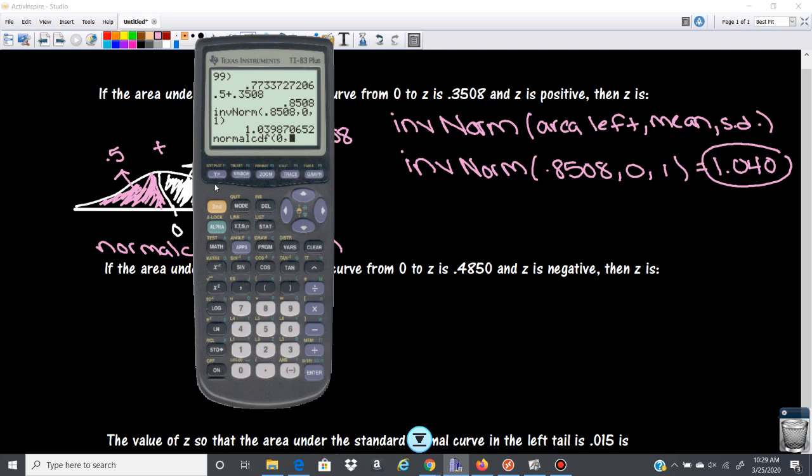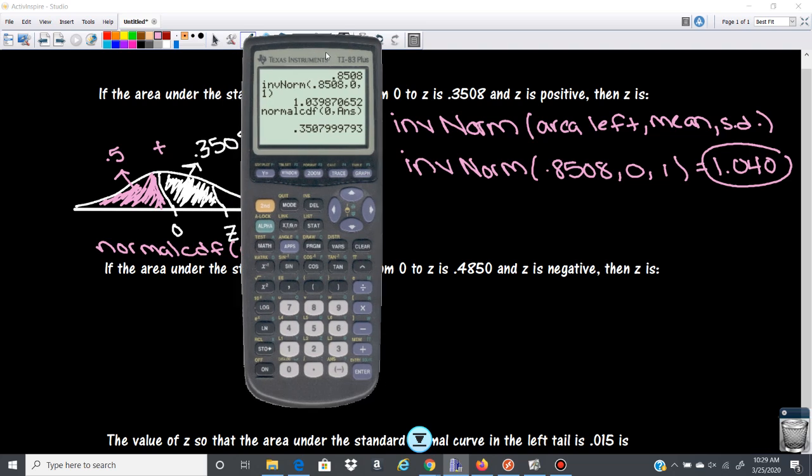I'm just going to put the second answer in so I can get it completely accurate. So second negative gives me the previous answer, 0.350, and that would round to 8. Okay, so that's how we check those.